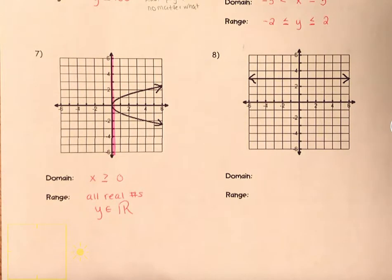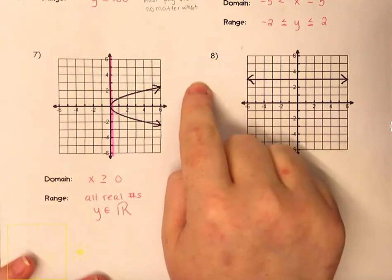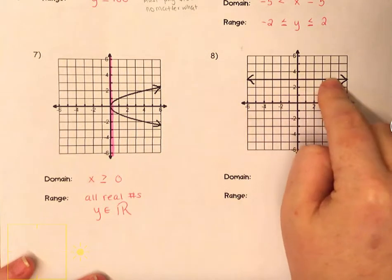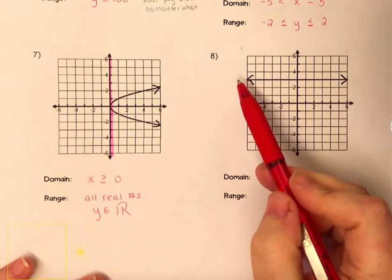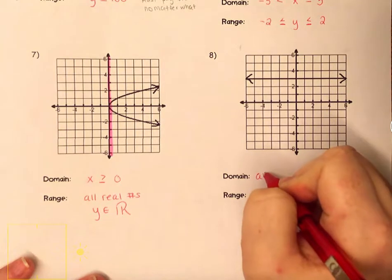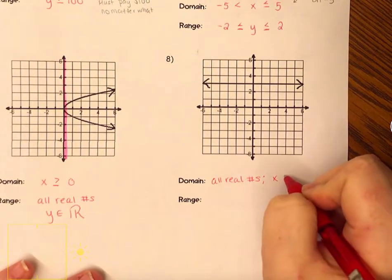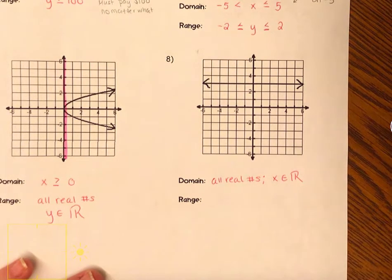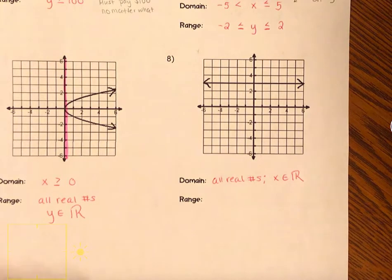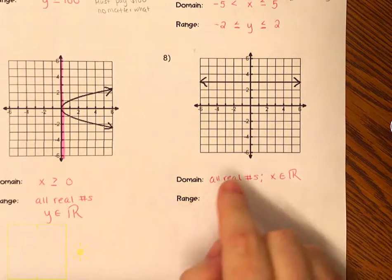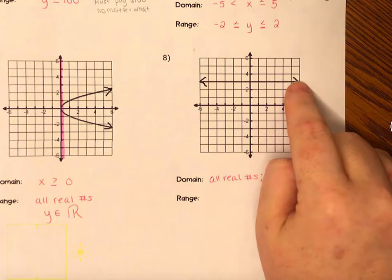For number eight, again domain and range — we just have x's and y's. Our domain is the farthest one to the left and farthest to the right. This arrow tells me the graph keeps going to the left, so I don't have a starting point on the left, and this graph keeps going to the right, so I don't have an ending point. Just like range in the last example, our domain here is every single x-value there is — all real numbers. We can write this as x is an element of all real numbers. For the range, we want to find the smallest y-value — right now our y-value is at positive three, and this graph is just pointing to the right.